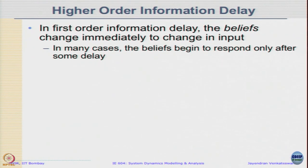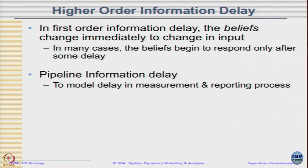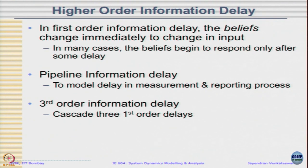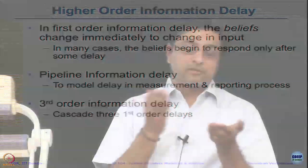Higher order information delays, what does it mean and how do you model it? In first-order delay, the beliefs change immediately on changes to input. In higher order delays it takes time for the belief to change, it responds only after some delay. A simplest form of it is a pipeline information delay, where if there is only a measurement or reporting delay where values are not changed, I am just going to communicate it. Then it can be modeled very similar to a pipeline material delay. That information is conveyed, there is no change in the information. Let me give an example of the third-order information delay.